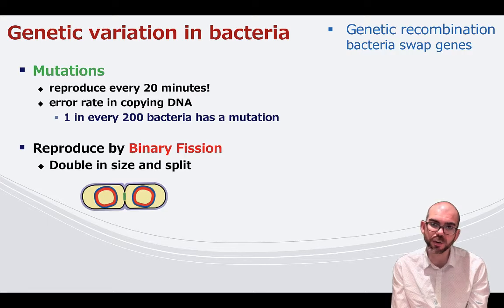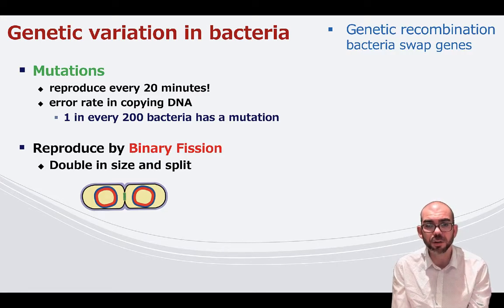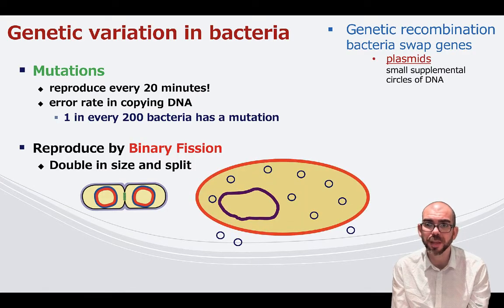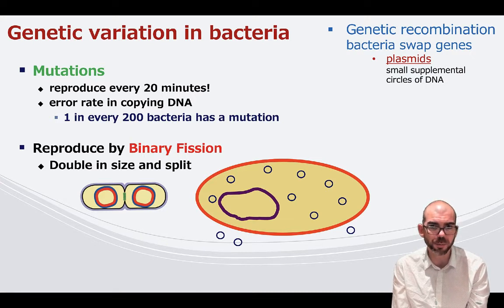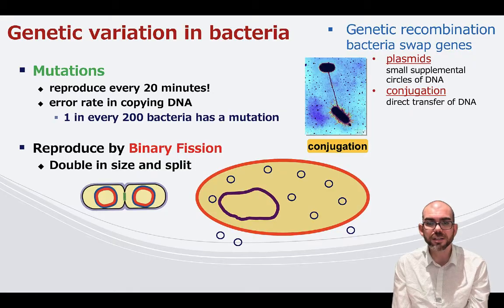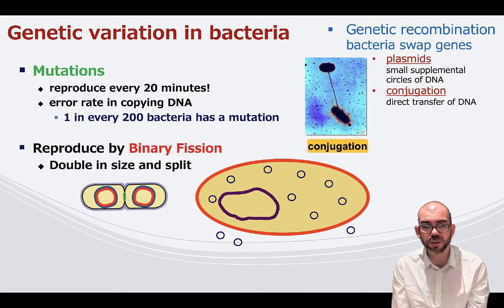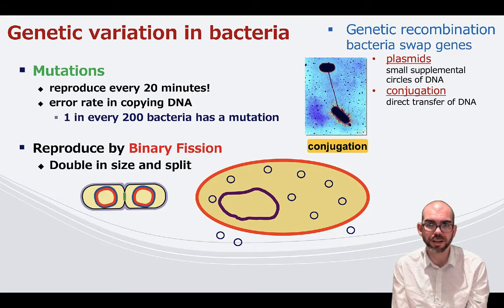Two other ways bacteria increase genetic diversity are by genetic recombination. They can take DNA from outside themselves and express it — one way is to uptake a plasmid, small circles of DNA outside their central chromosome, which can be taken from the environment and expressed, creating more genetic diversity. Another way is conjugation, where bacteria form a structure called a pili, attach it to another bacterium, and use it as a highway for directly transferring DNA.